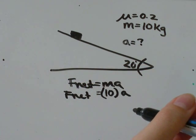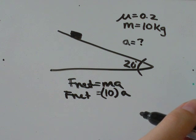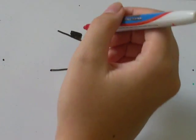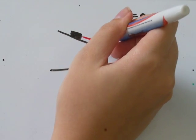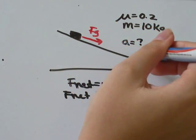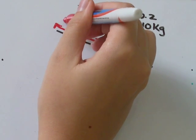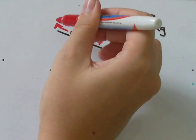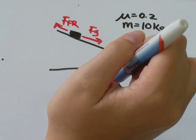Now Fnet just means the sum of the forces. So we just need to think about what forces we have acting on this object. We only really have two. We have the force of gravity pulling the box down the ramp, and then we have the force of friction in the opposite direction resisting the force of gravity.